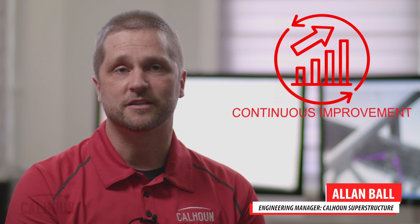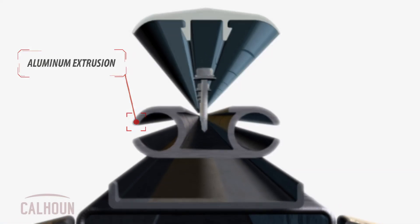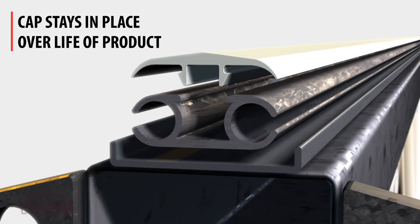Our aluminum extrusion is unique to Calhoun's and it's specially designed in coordination with the snap cap so the cap stays in place over the life of the product. Those are really designed in concert. They're made unique to our specifications.